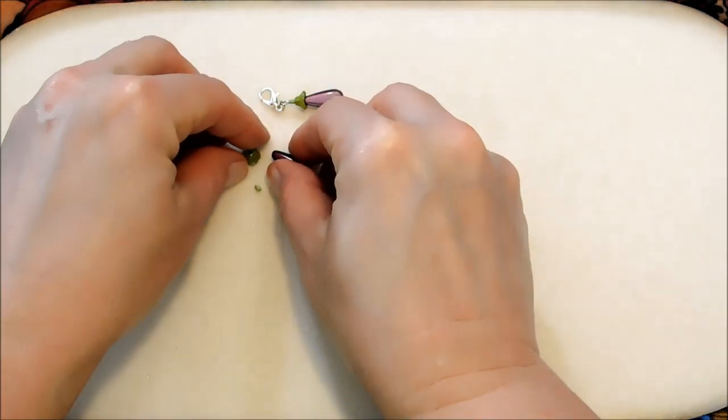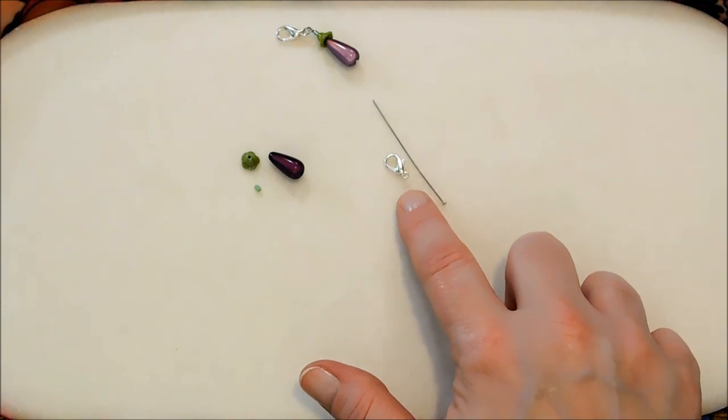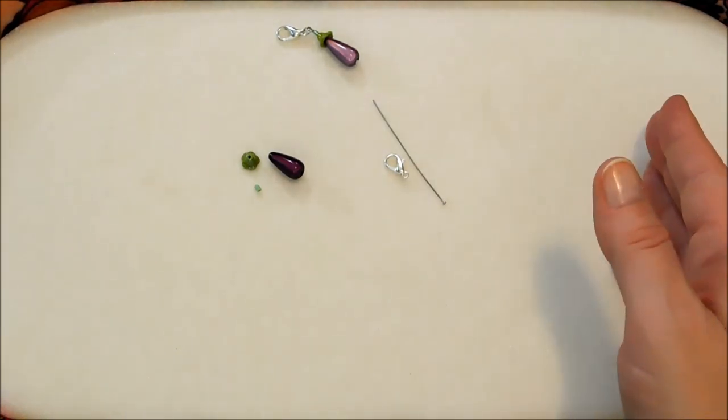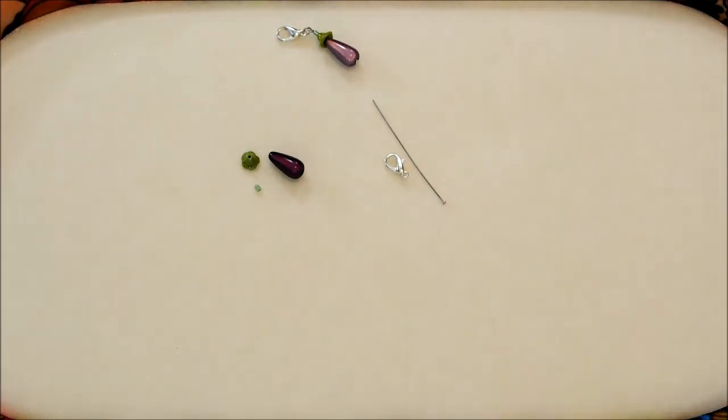So that is the three beads that we need. And then I've got a two-inch head pin and a lobster clasp. And of course, if you don't want to make your own jump ring, bring in a jump ring. But I'll be making mine from my excess that I cut away from my head pin.